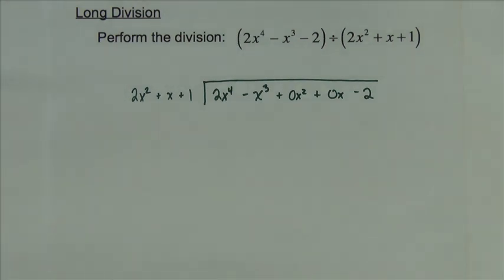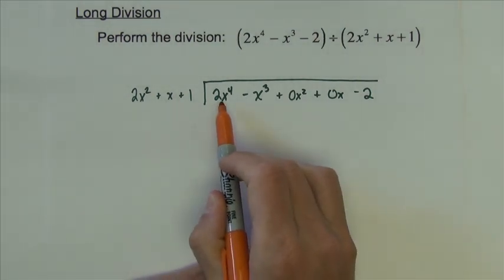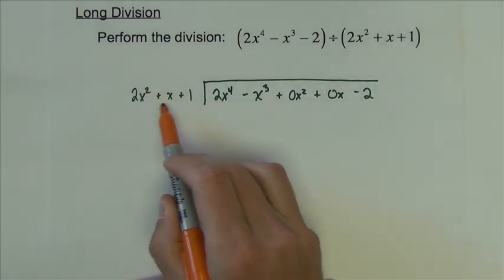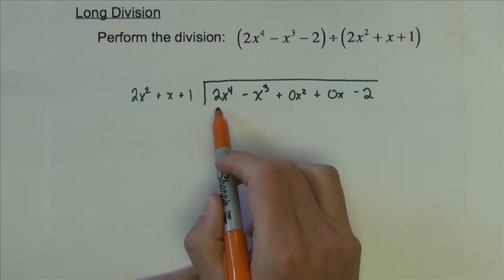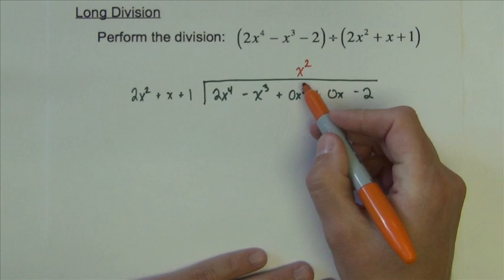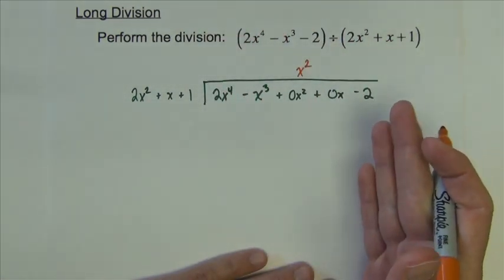So we begin this by asking the question, how many times does 2x squared go into 2x to the fourth? Or ask it this way, what can I multiply 2x squared by to get 2x to the fourth? And the answer is x squared. I'm just placing that over the x squared here, so I'm just going to vertically align like terms.